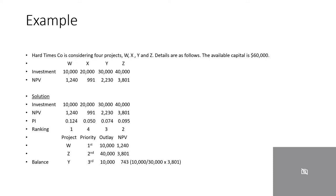Example: Hard Times Company is considering four projects — W, X, Y, and Z. The available capital is $60,000. Project W requires an investment of $10,000 with an NPV of $1,240. Project X requires an investment of $20,000 with an NPV of $990. Project Y requires an investment of $30,000 with an NPV of $2,230. Project Z requires an investment of $40,000 with an NPV of $3,801.